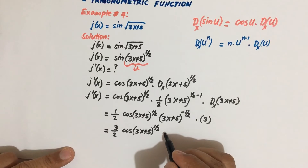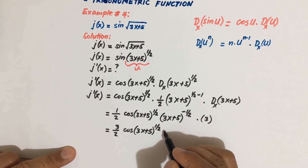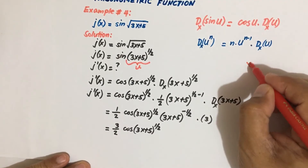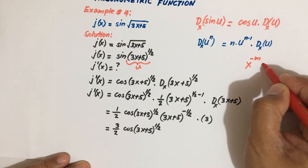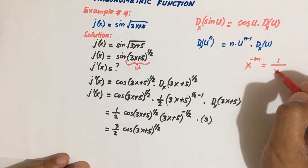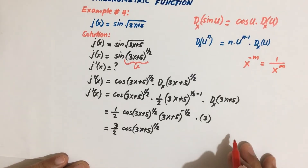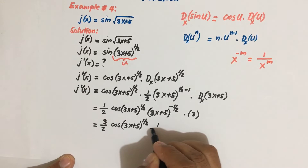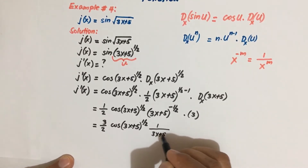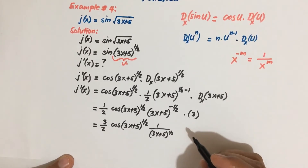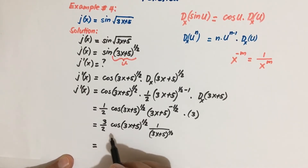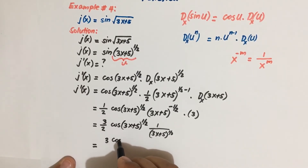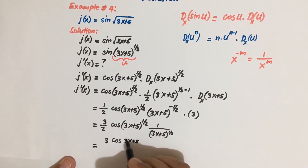The exponent on the remaining factor is negative, so we apply the law of exponents: x to the minus m equals 1 over x to the positive m. So we rewrite 3x plus 5 raised to power negative one-half as 1 over 3x plus 5 raised to the positive one-half.